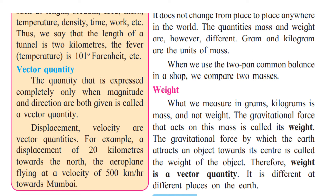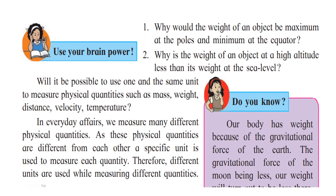What we measure in our day-to-day life is mass and not weight. Use your brain power: Why would the weight of an object be maximum at the poles and minimum at the equator? Why is the weight of an object at a high altitude less than its weight at sea level? To check your answers, you can visit our website at www.jkacademypro.com — you will get the link in the description box below.